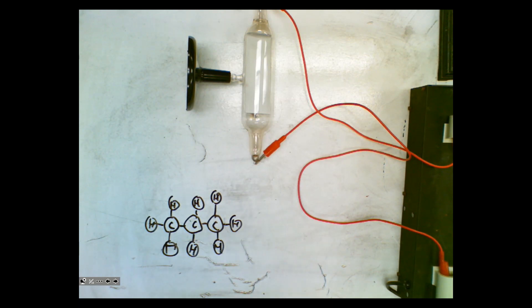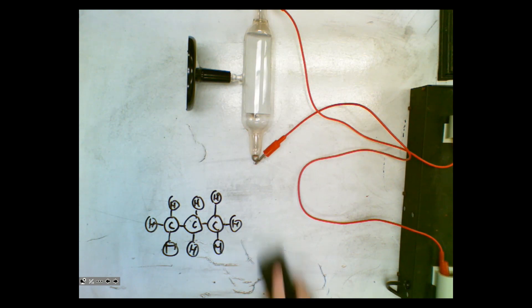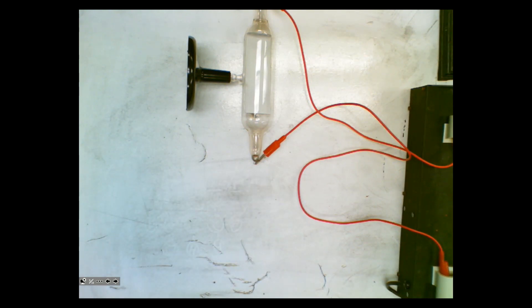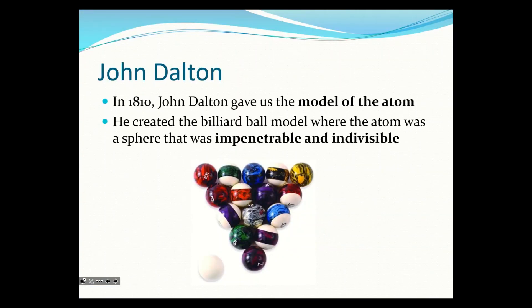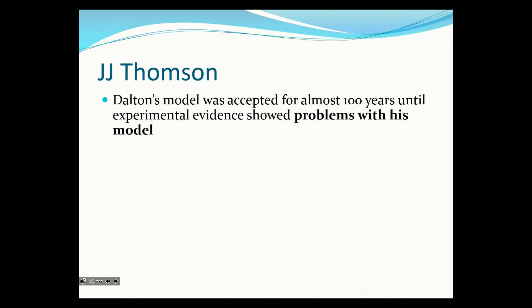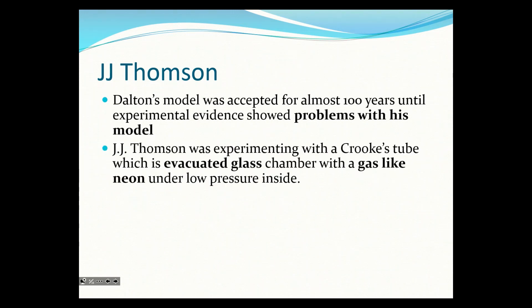We don't care about electrons or protons — we just say these are the atoms and they arrange themselves this way. Some models work in some situations and some work in other situations, and that's what we're going to explore in this unit. Dalton's model was accepted for almost a hundred years, and the only reason you need to change a model is if you get experimental evidence that shows problems with it. JJ Thompson was experimenting with a Crookes tube or cathode ray tube.